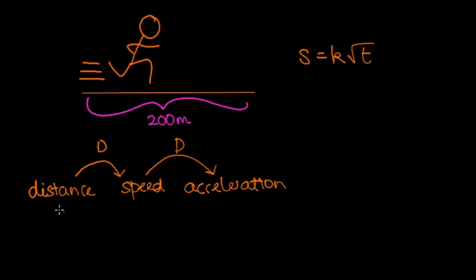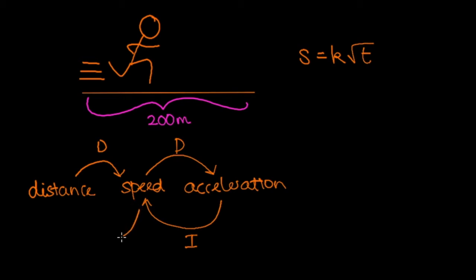Going from right to left we have to integrate. So if we've been given acceleration as a function of time, integrating gives us the speed. And if we have speed as a function of time, integrating again gives us the distance.